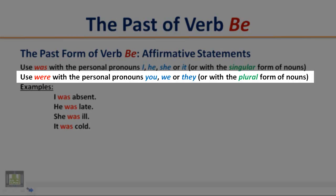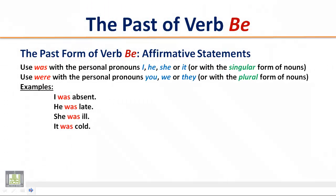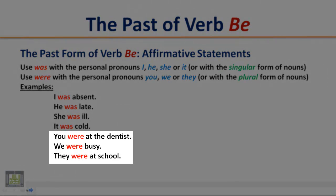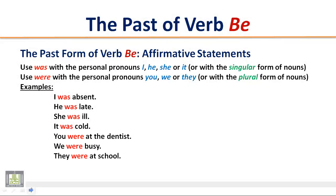Use 'were' with the personal pronouns you, we, or they, or with a plural form of nouns. Examples: You were at the dentist. We were busy. They were at school.